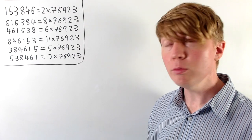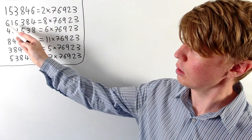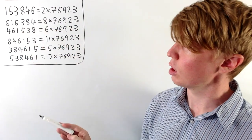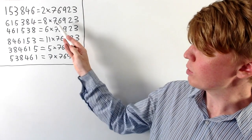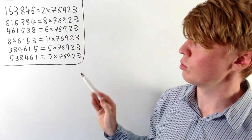But then if we take the 6 at the end of our first number and move it to the front, keeping the other digits, we've still got a multiple of 76923.